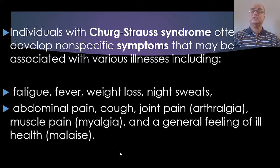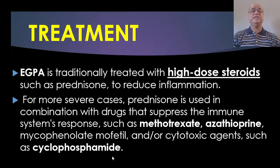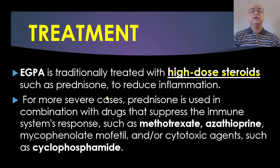Individuals with Churg-Strauss syndrome often develop non-specific symptoms associated with various illnesses including fatigue, fever, weight loss, night sweats, abdominal pain, cough, arthralgia, myalgia, and a general feeling of ill health — malaise. EGPA is traditionally treated with high-dose steroids such as prednisolone to reduce inflammation. For more severe cases, prednisolone is combined with drugs that suppress the immune system such as methotrexate, azathioprine, mycophenolate, or cytotoxic agents like cyclophosphamide.